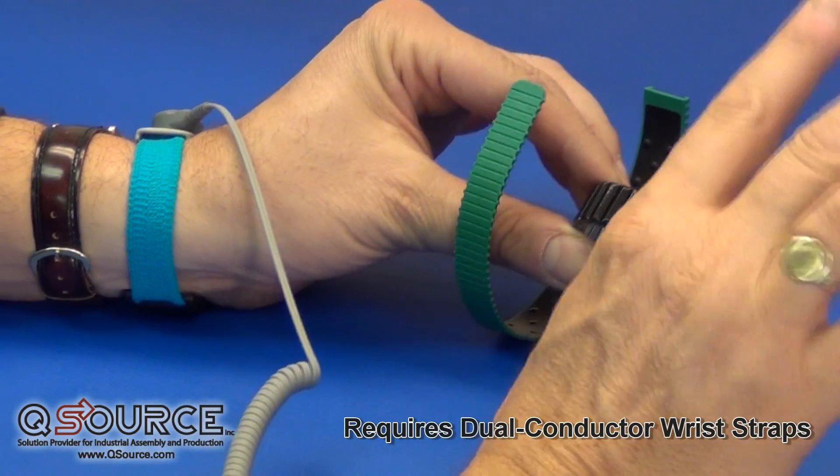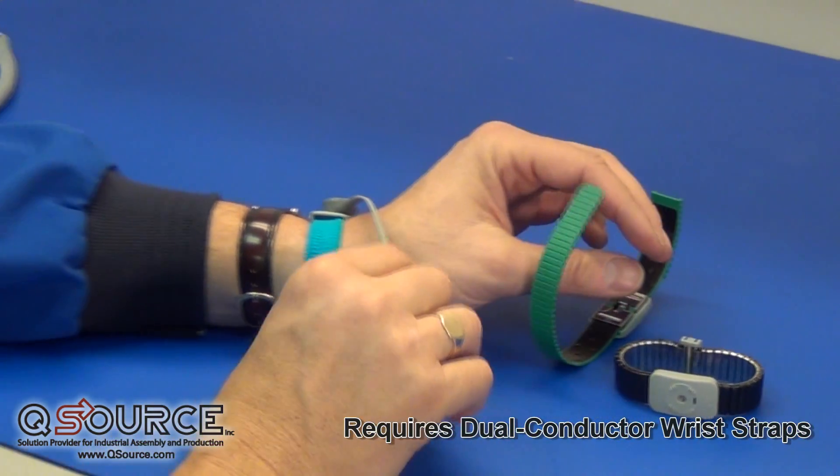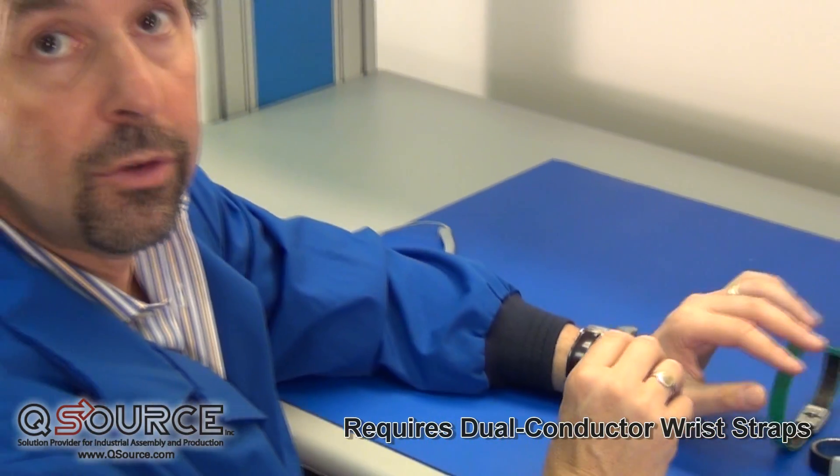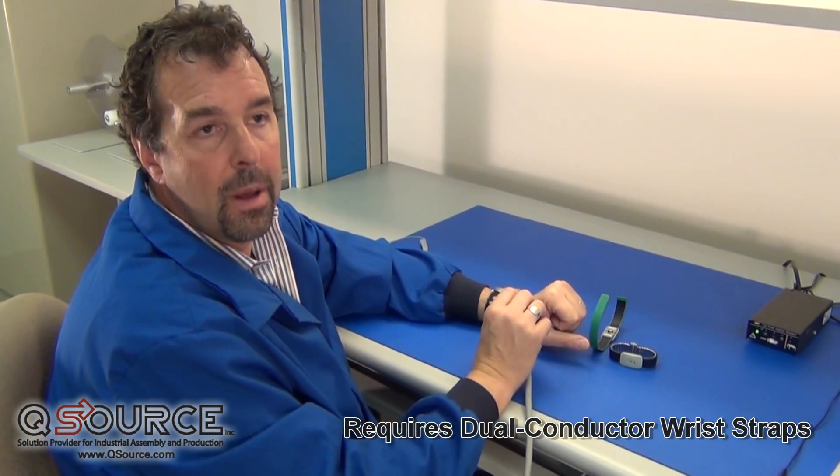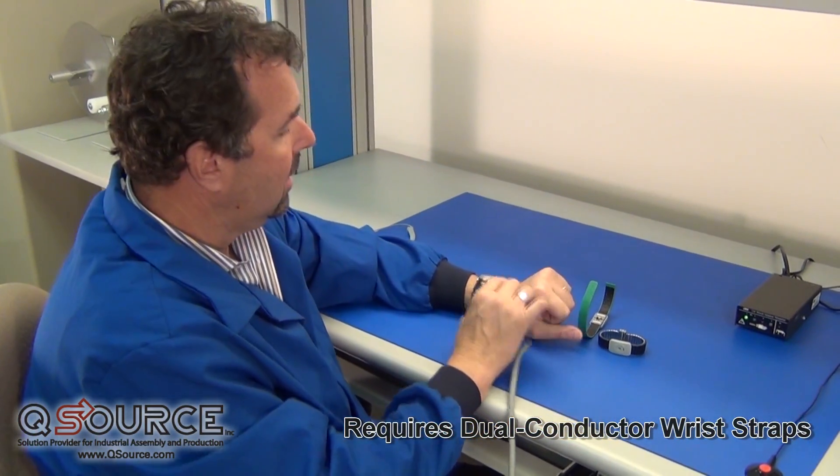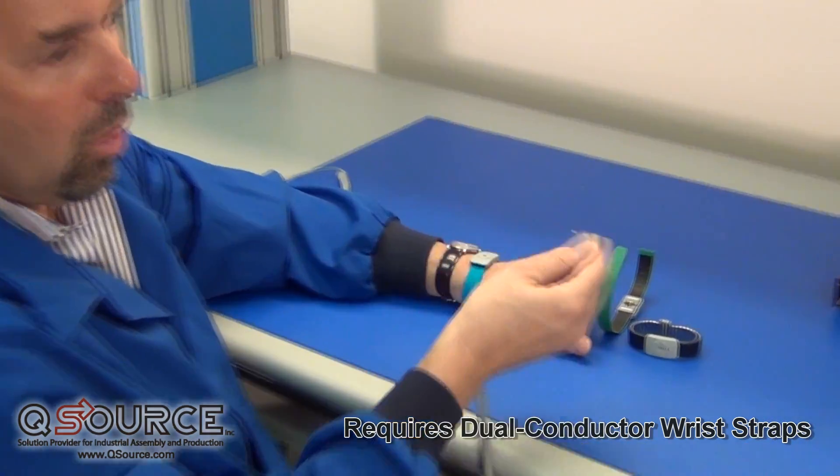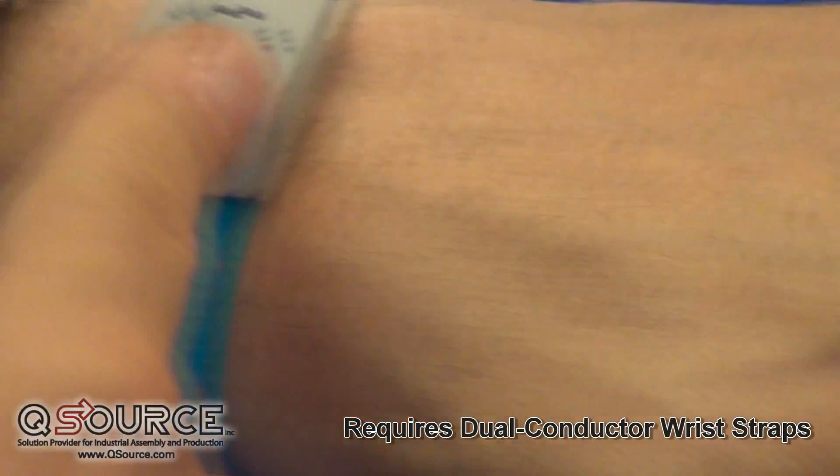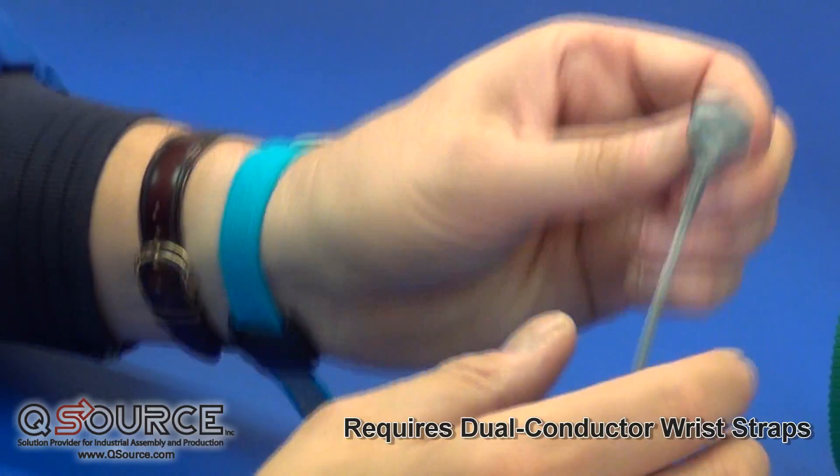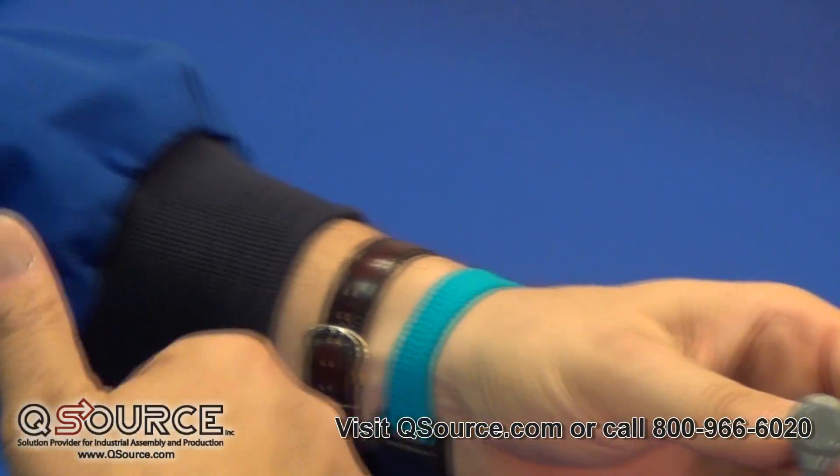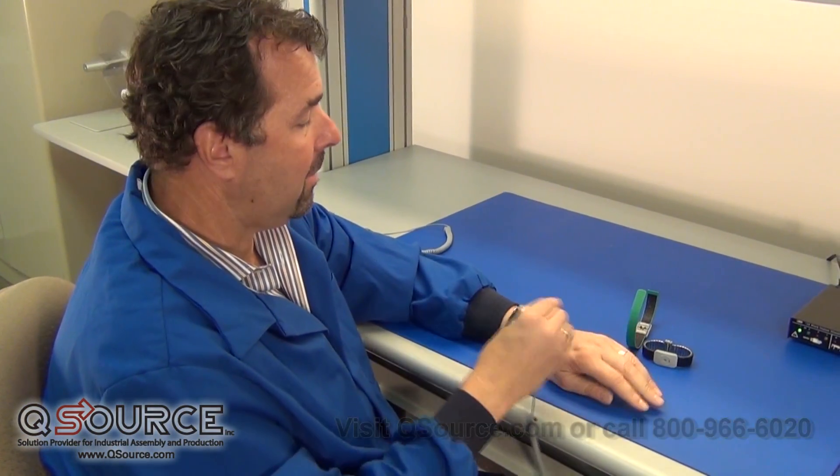All of the wrist straps with these constant monitors are dual conductor wrist straps. They will not accept the standard banana plug jack. They require special cords and matching wrist straps, which are two-wire. They look the same to an operator. However, they are two-wire because they complete a loop where we're testing the operator at all times.